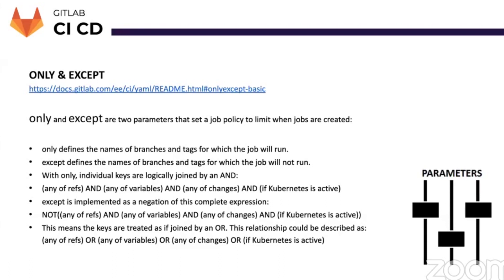You can add any condition under which your job should run. An important rule to keep in mind: if both 'only' and 'except' are defined in the job specification, the ref is filtered by 'only' first. Both 'only' and 'except' allow use of regular expressions, which is a really interesting feature that makes any kind of customization possible. For example, you can run a job for branches whose names start with 'release' or 'test'. Additionally, 'only' and 'except' allow you to specify repository paths to filter jobs for forks as well.